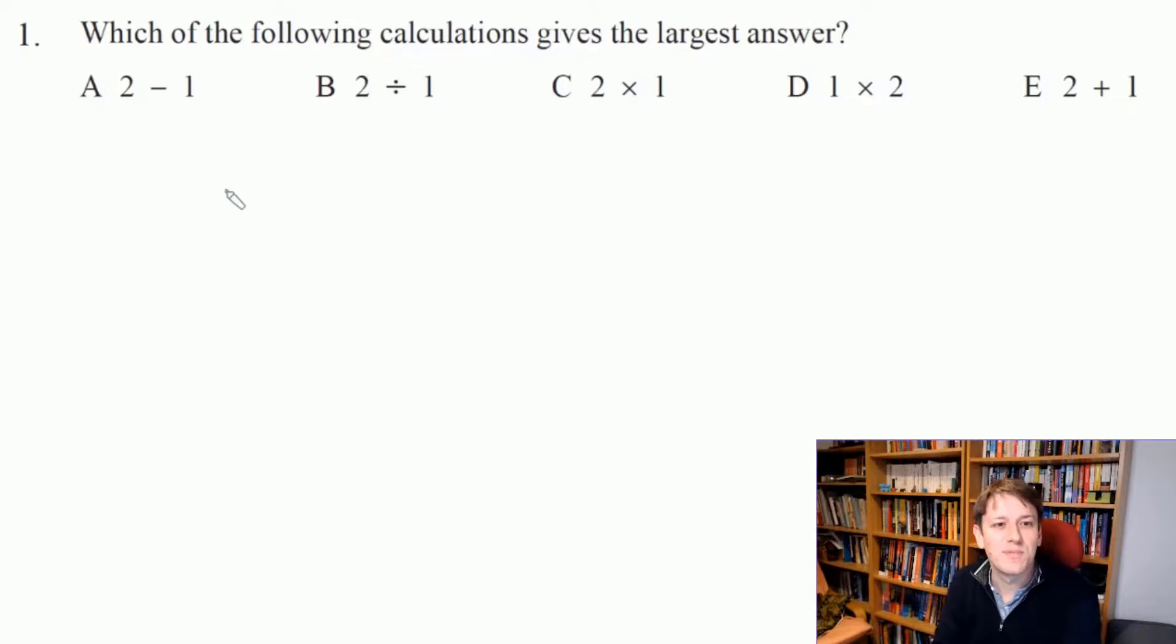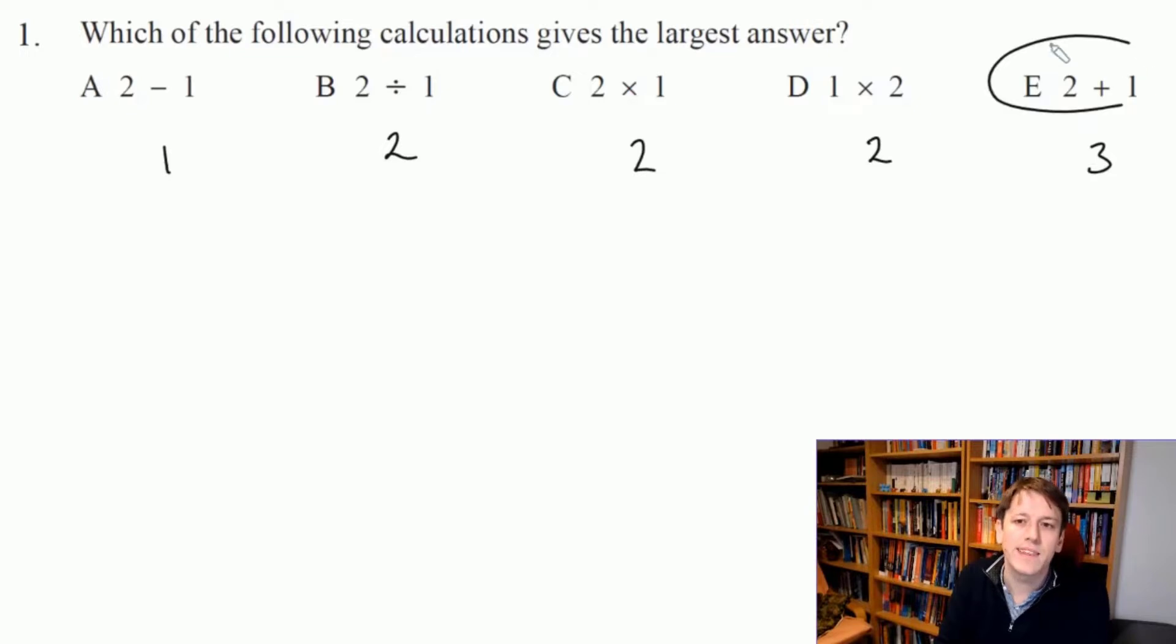So nothing to do apart from to work them out quickly. 2 minus 1 is 1, 2 divided by 1 is 2, 2 times 1 is 2, 1 times 2 is 2, and 2 plus 1 is 3. So the largest of these is 3 and the answer is E.